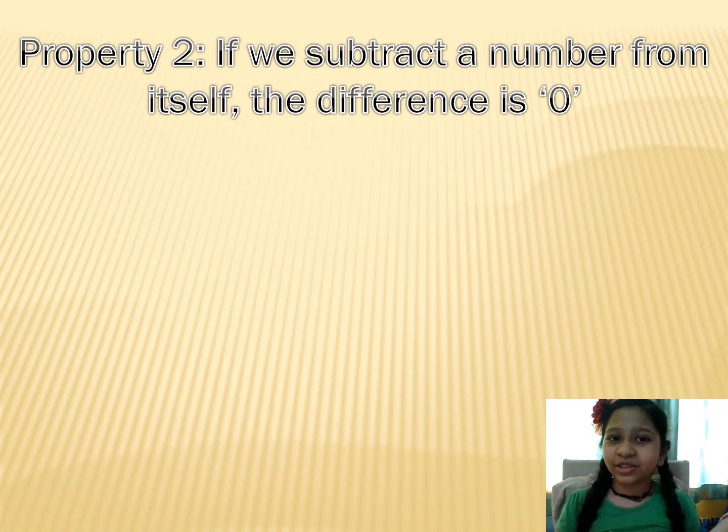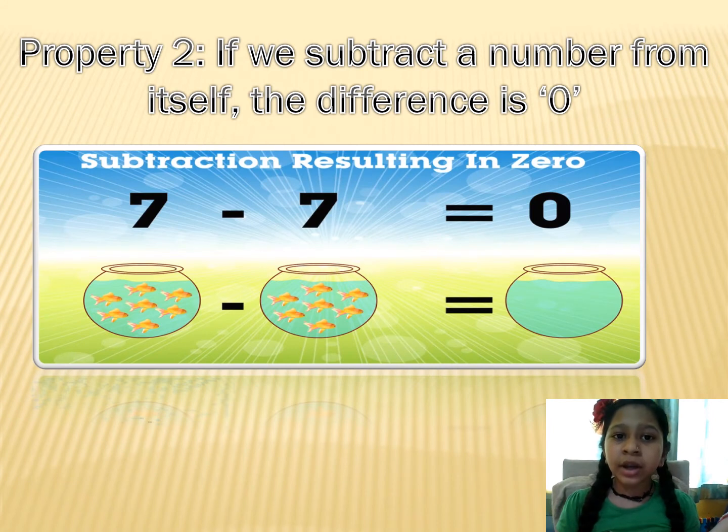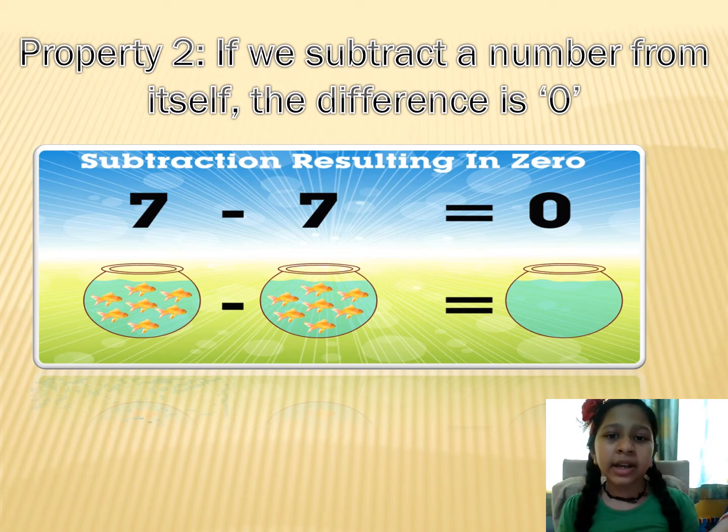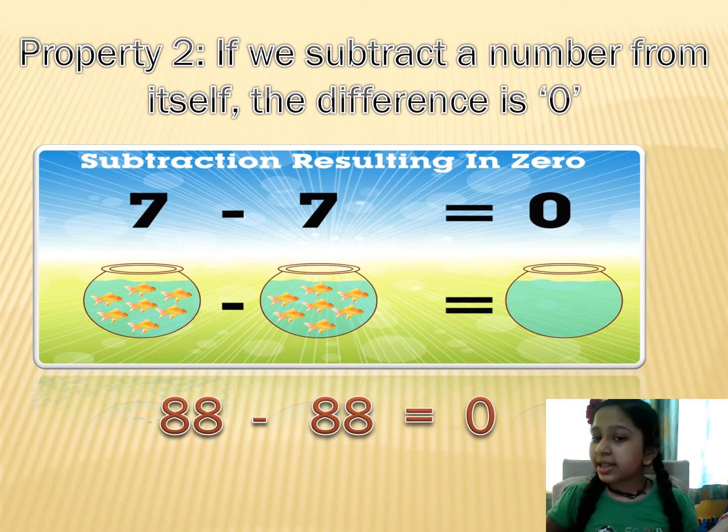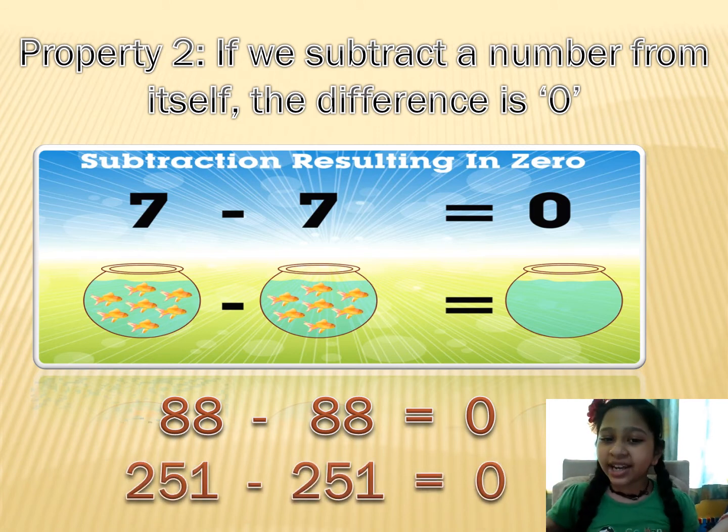Property 2. If we subtract a number from itself, the difference is 0. Like 7 minus 7 is equal to 0. 88 minus 88 is equal to 0. 251 minus 251 is equal to 0.